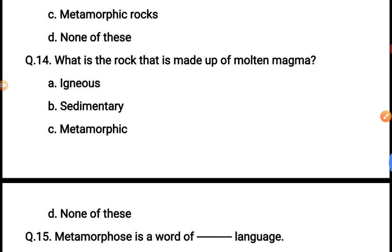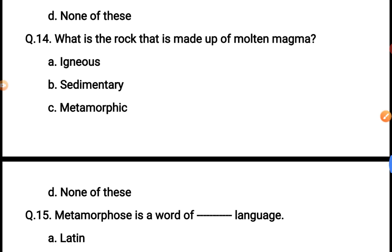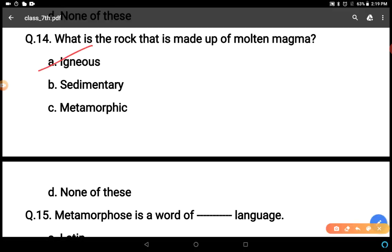What is the rock that is made up of molten magma? Igneous, sedimentary, metamorphic, none of these. The answer is igneous rocks.